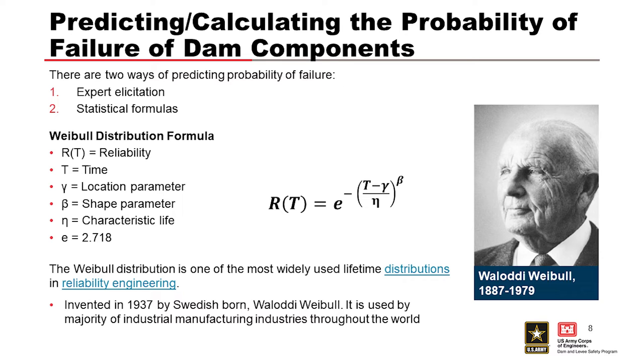This is talking about a way of predicting or calculating the probability of failure of dam components. Two ways that we typically predict probability of failure. Expert elicitation or statistical formulas. The Weibull distribution formula is one of those formulas.